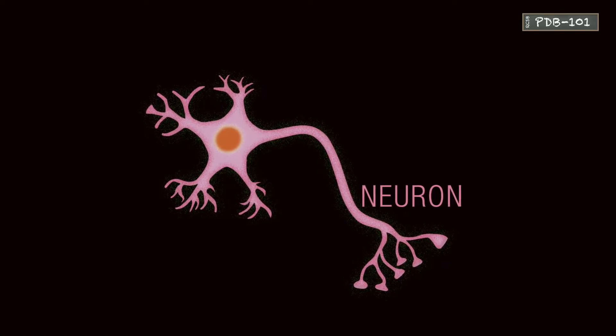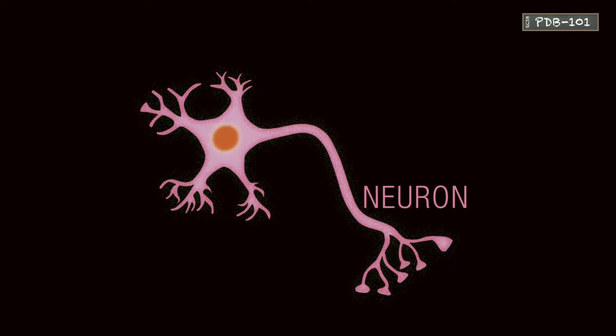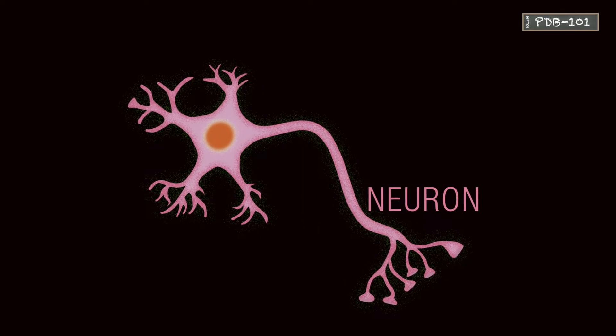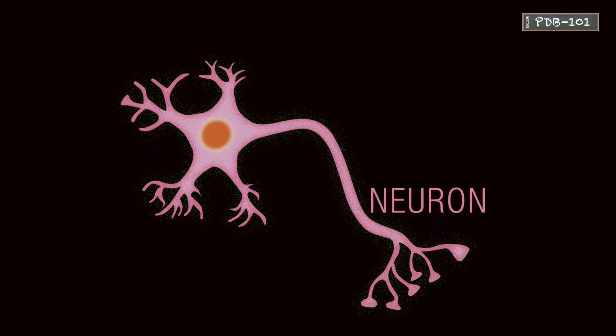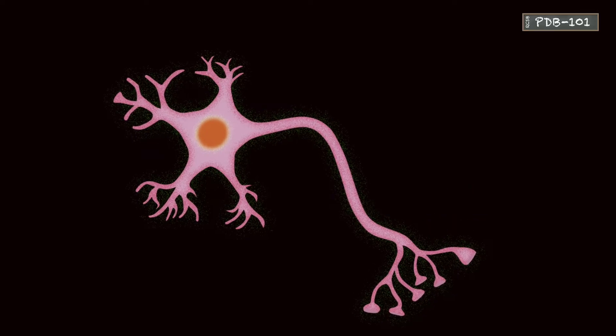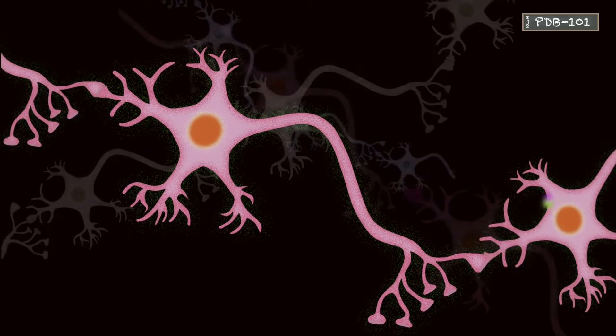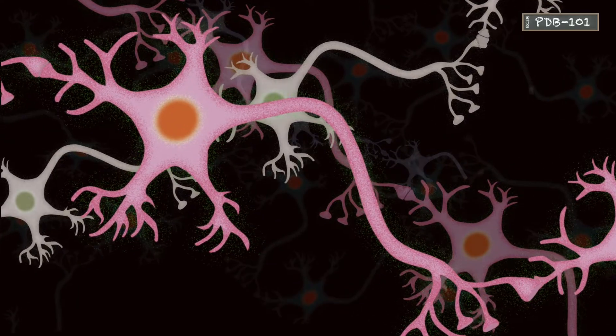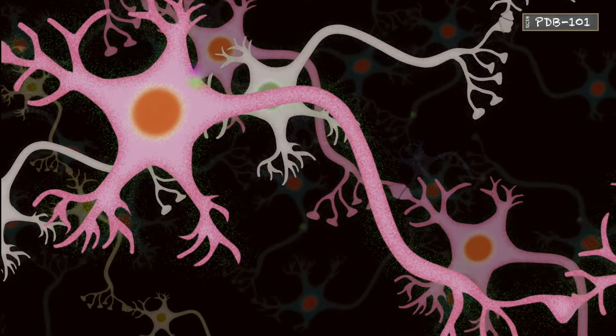Neurons are specialized cells that transmit information. Within the nervous system, they are arranged into complex networks of circuits that enable our thoughts, sensations, and actions.